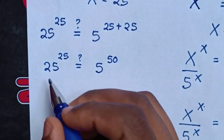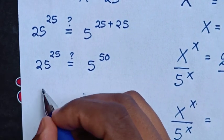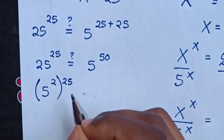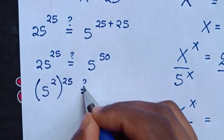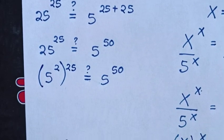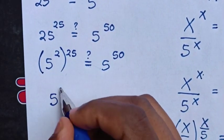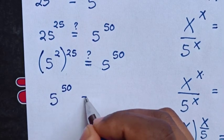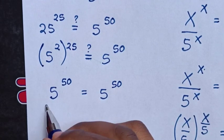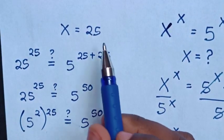Then we'll make the base of 25 the same as the base of 5. So 25 is the same as 5 squared, then bracket power of 25 is equal to 5 power of 50. Then it will be 5 power of 2 times 25, which is 5 power of 50, and this equals 5 power of 50. Therefore the left side and right side are equal, so it's true for x equal to 25.